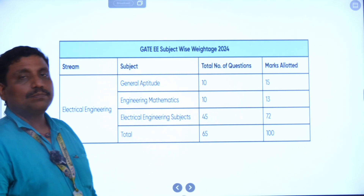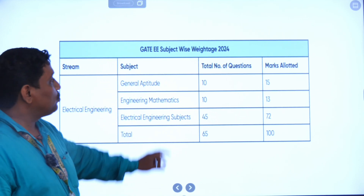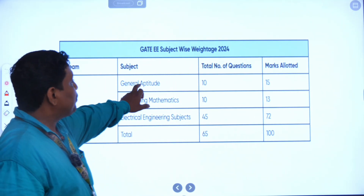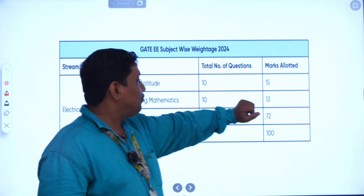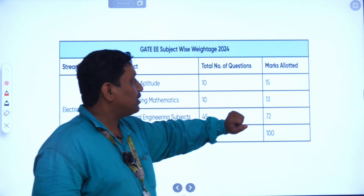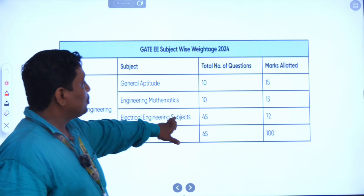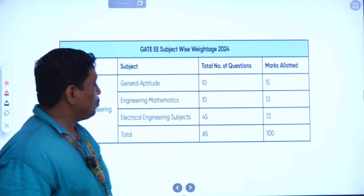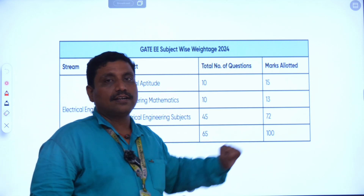In our department, subject-wise weightage for 2000-2024: General Aptitude has 10 questions with a mark allocation of 15. Engineering Mathematics has 10 questions with mark allocation of 13. Our Electrical Engineering subject has a total of 45 questions with mark allocation of 72. Overall, 65 questions for 100 marks.